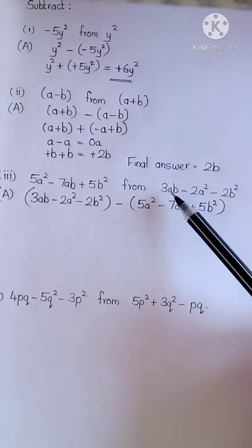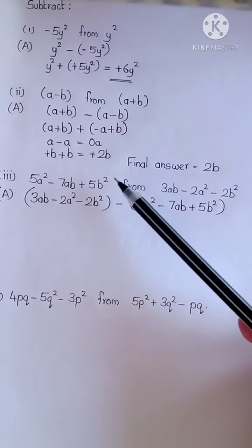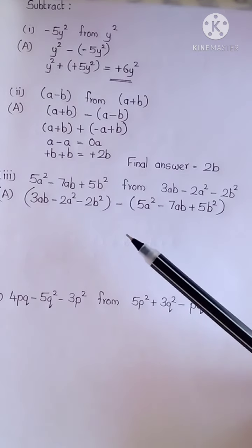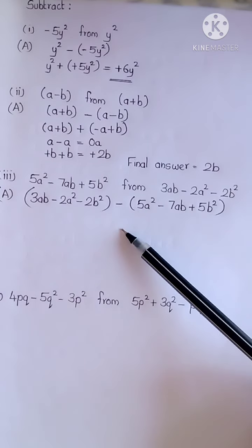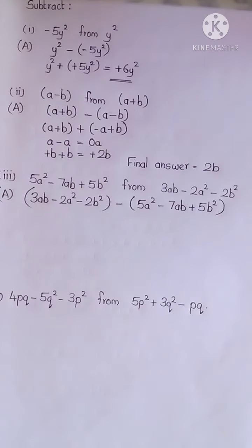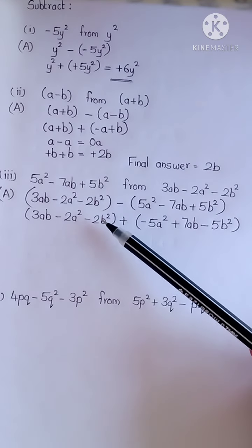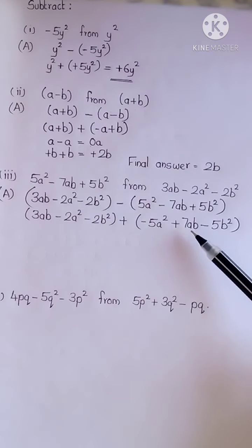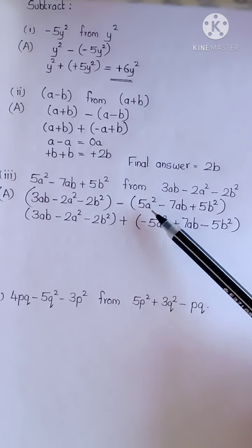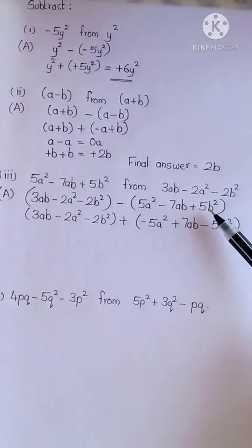Now you can see I have written whatever comes after 'from' first, then the subtraction sign, and then the first expression. First expression as such, subtraction sign changes to addition sign, additive inverse of the second expression. I have written the first expression as such, subtraction sign changed to addition sign. For the second expression: 5a square became minus 5a square, minus 7ab became plus 7ab, plus 5b square became minus 5b square.